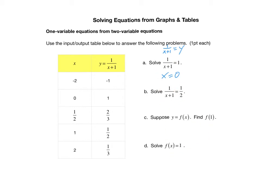Let's try the next equation. In this case, 1 over x plus 1 equals 1 half — so they're giving us a y value of 1 half. Make sure you're looking for a y value of 1 half, because notice there is also an x value of 1 half in the table — this is a particular y value. This point has a y value of 1 half, and the corresponding x value is precisely 1. So x equals 1 is the solution. No computation at all.